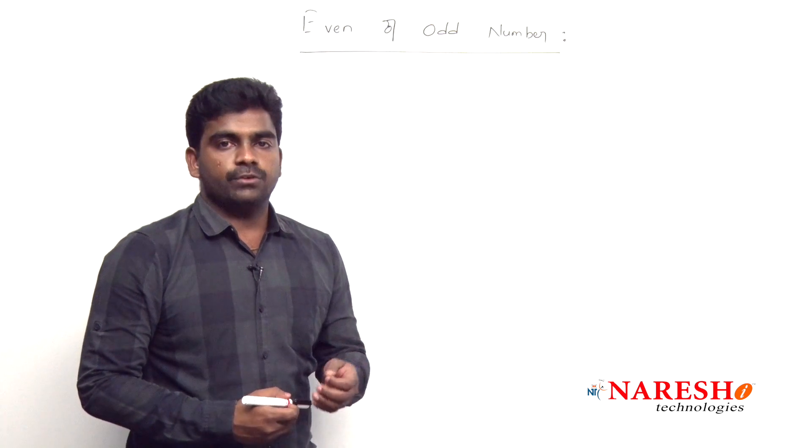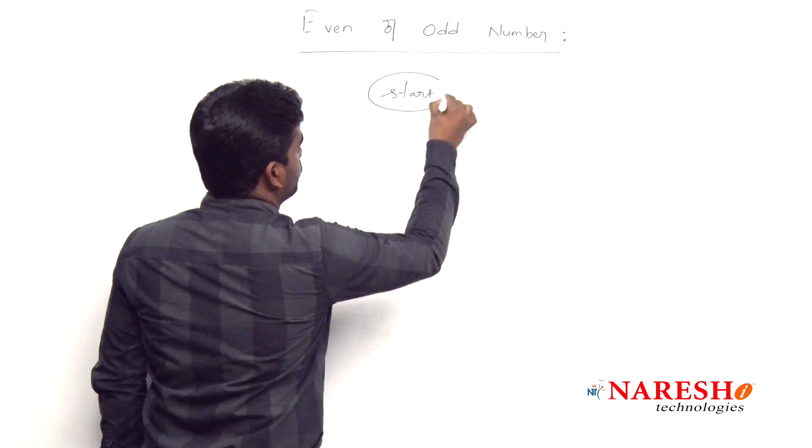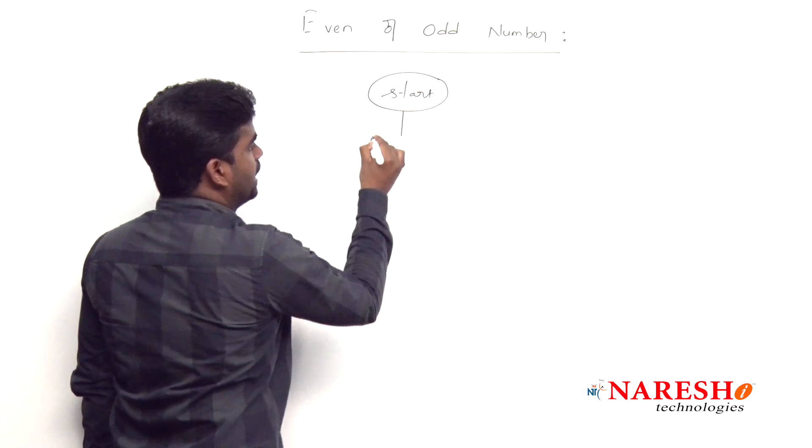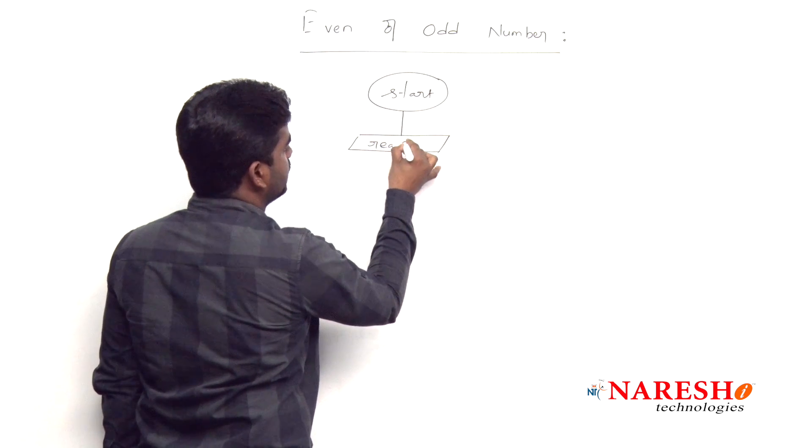How to write the flowchart? Here, the terminals start and now first we are declaring and reading the n value. Directly we are taking that input read n value.